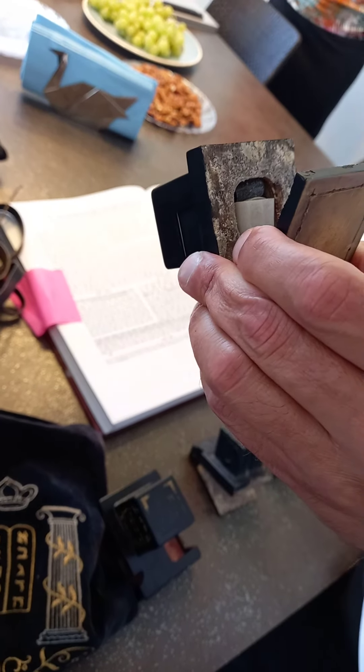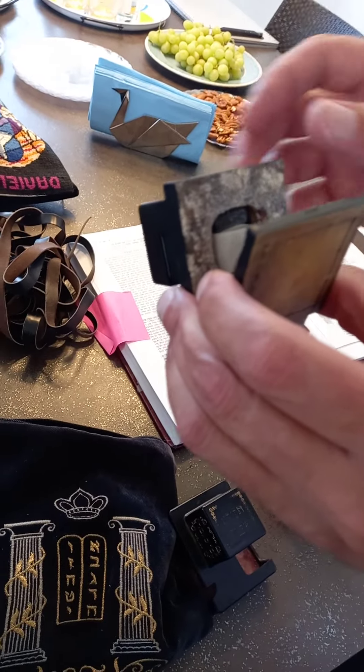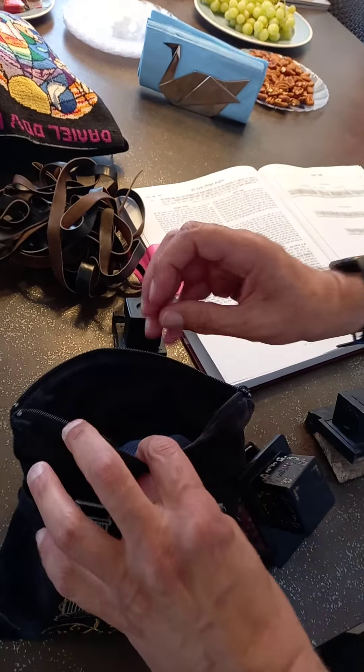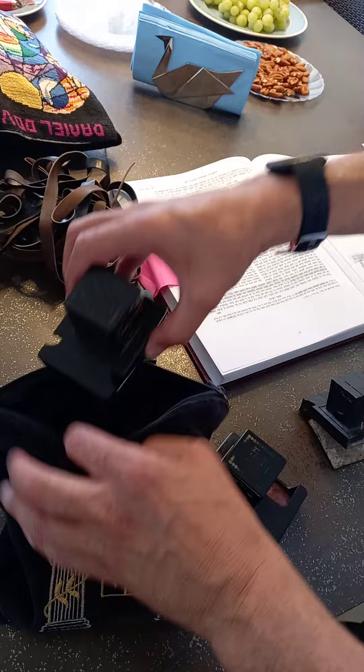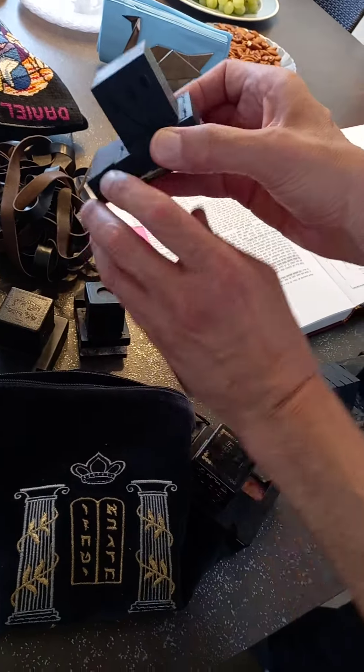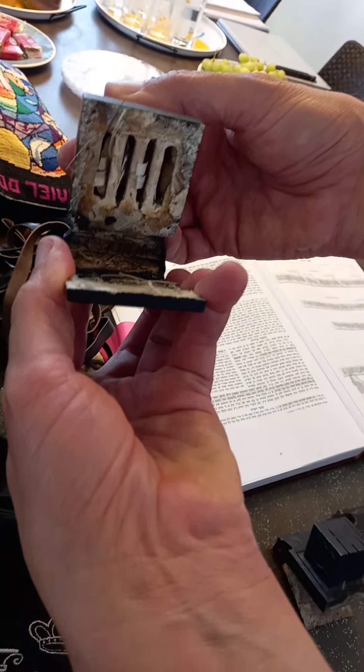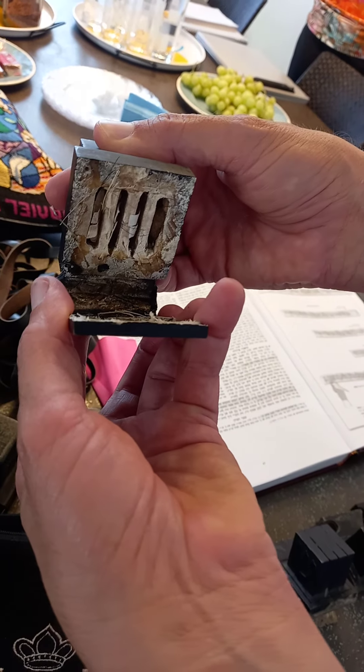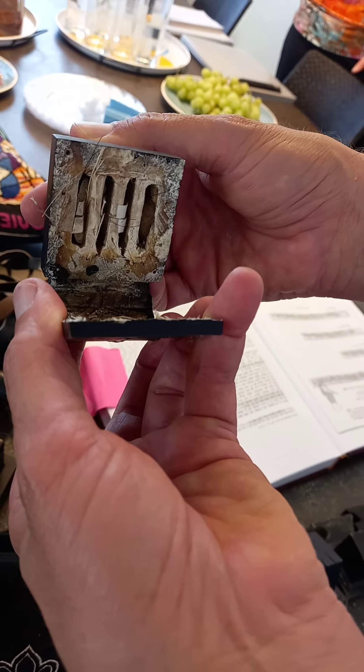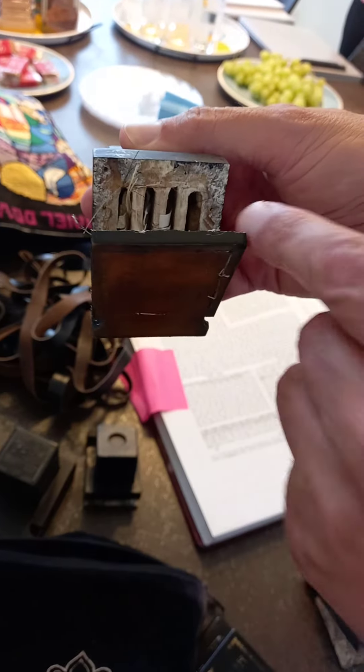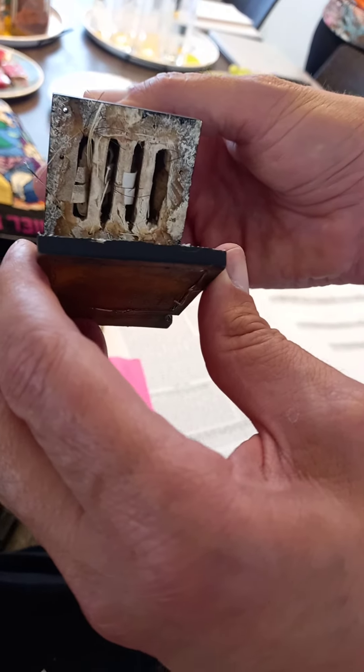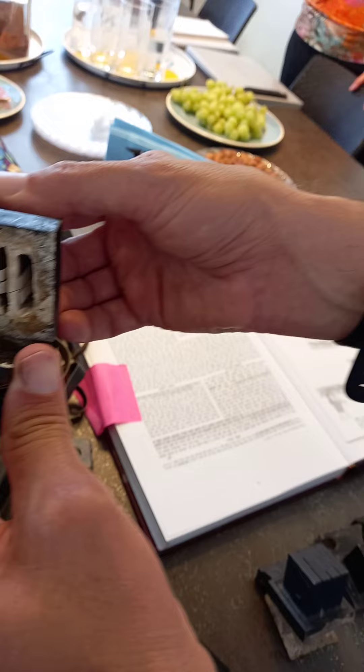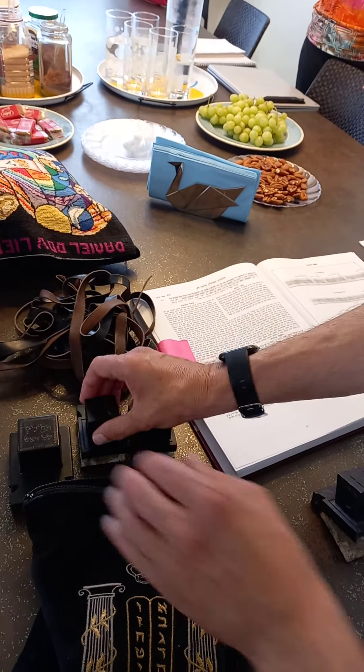And would you like me to now take it out? I want to tell the story of these tefillin first. I'll just show for a moment the difference, the Shel Rosh. It has four compartments. The Batim are in wonderful condition and they're great quality. And you can see four parchments inside.